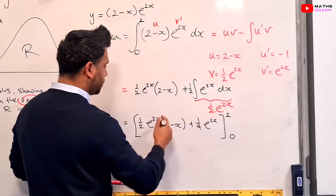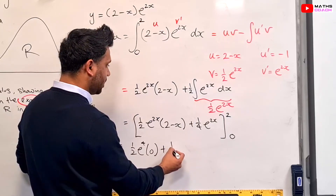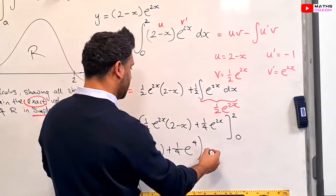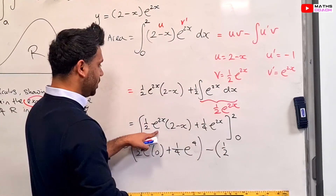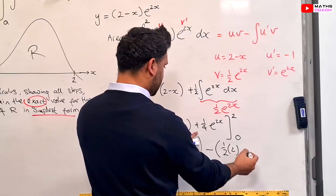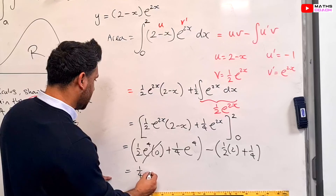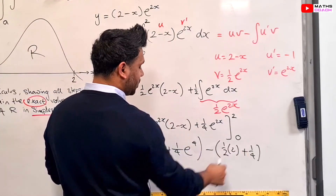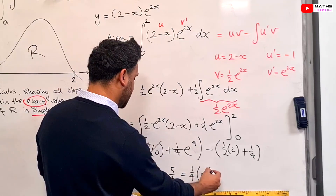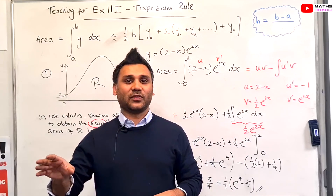Substituting the limits: putting in x = 2 gives ½e^4 × (2 − 2) + ¼e^4 = 0 + ¼e^4. Substituting x = 0 gives ½e^0 × 2 + ¼e^0 = 1 + ¼ = 5/4. So the exact area is ¼e^4 − 5/4, which can also be written as ¼(e^4 − 5). Hope you enjoyed the lesson and I'll see you in the next video. Don't forget to press the bell notification to subscribe.